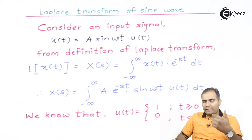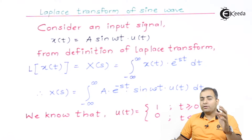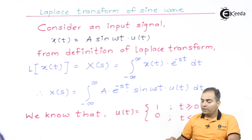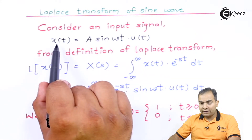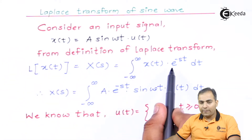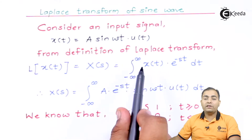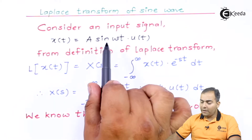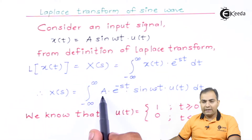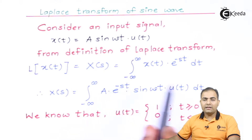Next, we apply the definition of the Laplace transform to convert this sine wave into the Laplace domain. According to the Laplace transform definition, X(s) equals the integral of x(t)·e^(−st) dt over the range minus infinity to infinity. My x(t) is a·sin(ωt)·u(t), so we have the integral of a·sin(ωt)·u(t)·e^(−st) dt.